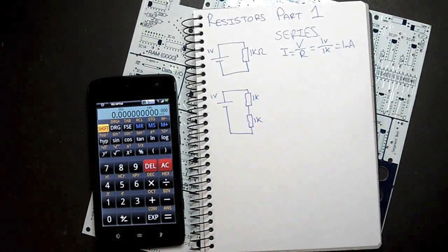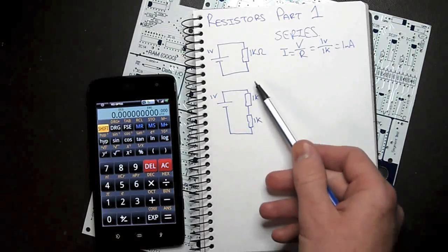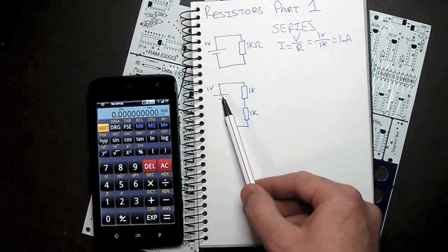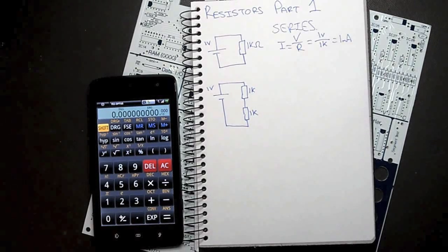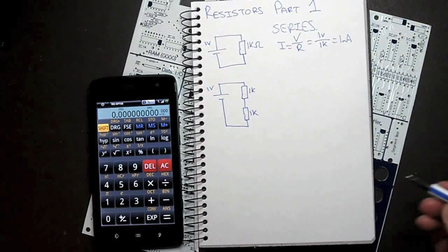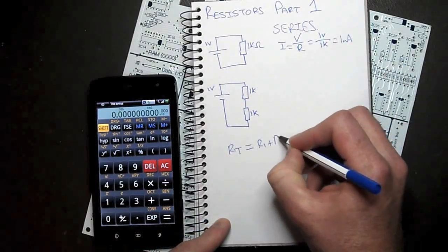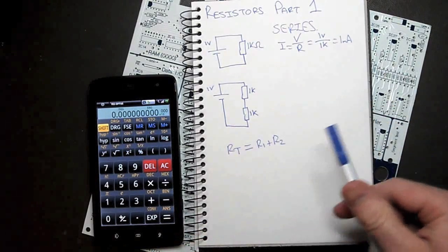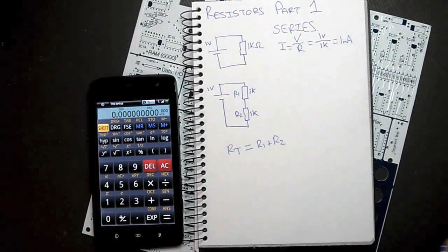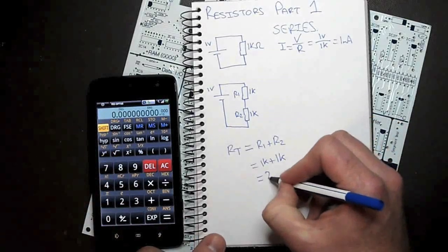What do you think might happen to the current flow? Well, if we visualize this again, these electrons want to start from the negative terminal and work their way around to positive. The electrons have to flow through this 1k resistor and this 1k resistor in order to get to this side. So it makes sense that we've increased the resistance by connecting two in series, or connecting them one after the other. So in a series circuit, RT or total resistance just equals R1 plus R2. If you've got more than two then it would be plus R3, R4, and so on. So for this circuit, 1k plus 1k is just 2k.